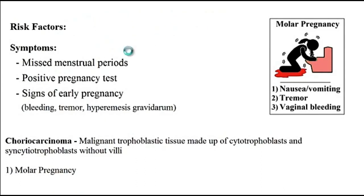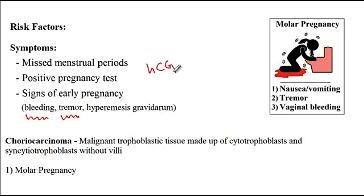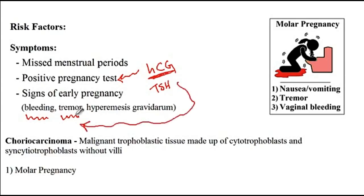Patients with molar pregnancy can present with missed menstrual periods, positive pregnancy tests, and early signs of pregnancy such as bleeding, which results from separation of the tumor from the underlying tissue causing vaginal bleeding, and tremors, which result from hyperthyroidism that develops in these patients. Since there is too much HCG production during molar pregnancy, the pregnancy test would be positive, and since HCG has a similar structure to thyroid stimulating hormone, it can stimulate thyroid hormone production, causing hyperthyroidism and tremors.